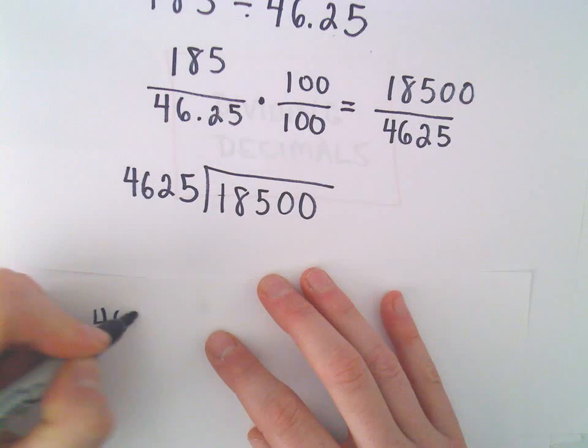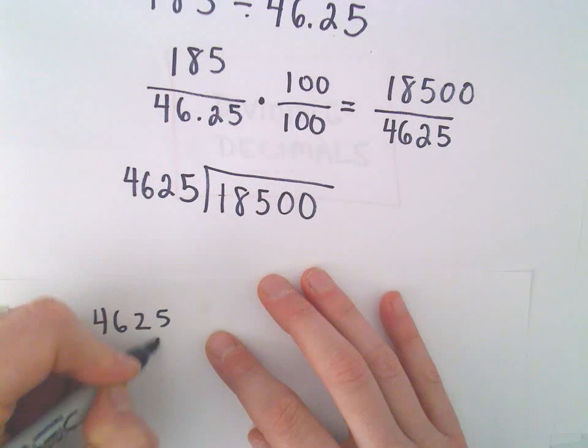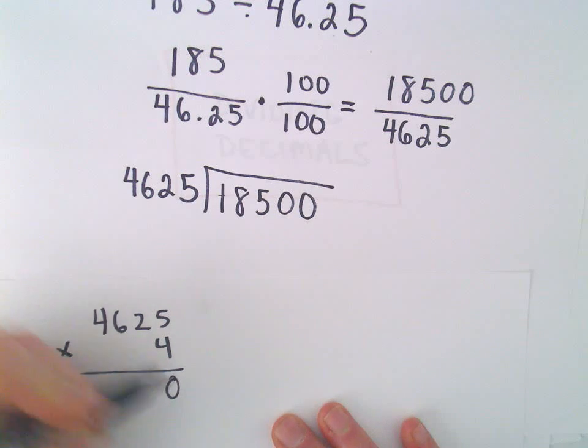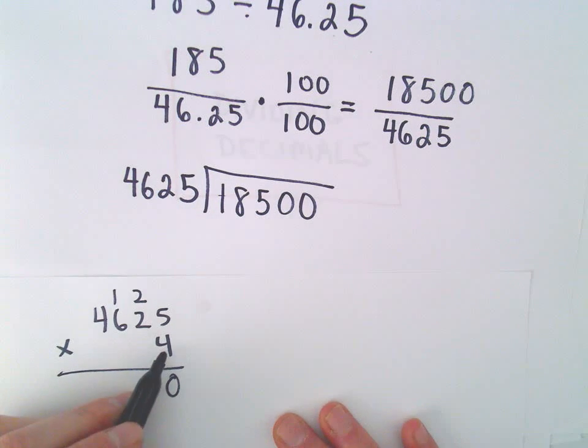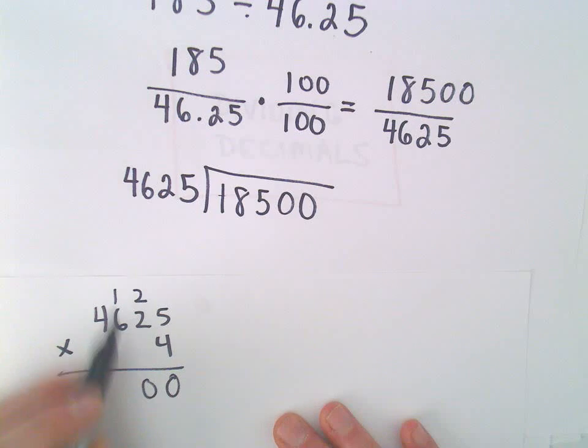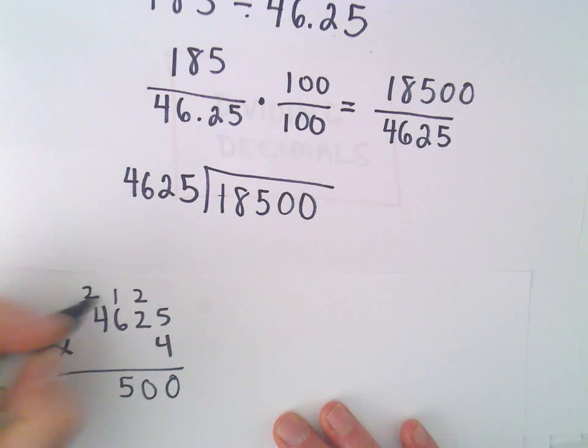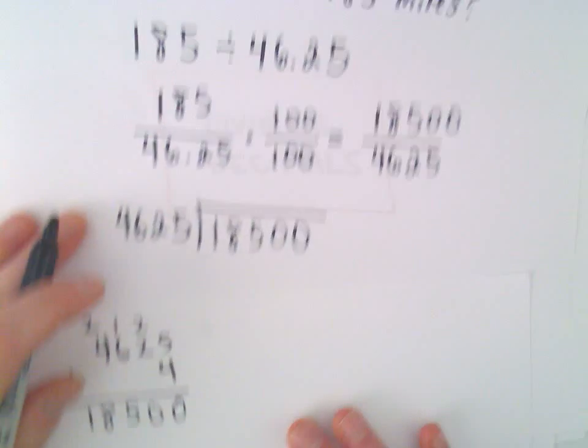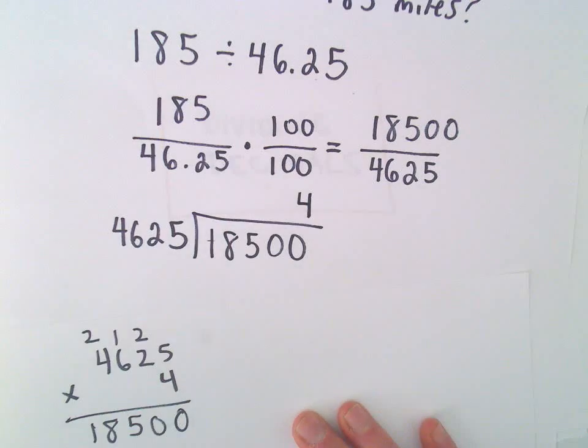Well, I'm going to check 46.25. Maybe let's try 4. So let's see. 4 times 5 is 20. We'll carry the 2. 4 times 2 is 8, plus 2 is 10. Carry the 1. 4 times 6 is 24, plus 1 is 25. We'll carry the 2. 4 times 4 is 16, plus 2 is 18. Hey, lo and behold, it goes in there exactly 4 times.